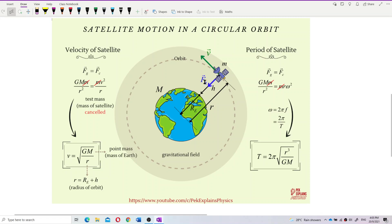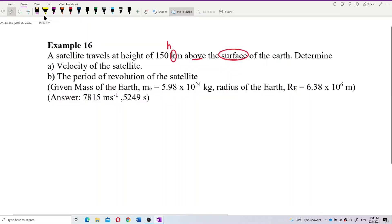And r is the radius of the orbit. Radius of the orbit means you must take the altitude plus the radius of Earth, not just the altitude. You must plus the radius of Earth. So I want to write again here.